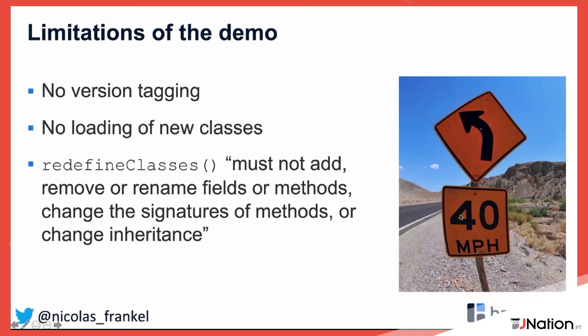There are limitations. First, versioning: with regular deployment you tag version 1.1, create the jar, remove 1.0, and deploy. With continuous deployment it doesn't work like that — you deploy several times per day, so you cannot reason in versions anymore. It's a mindset shift.